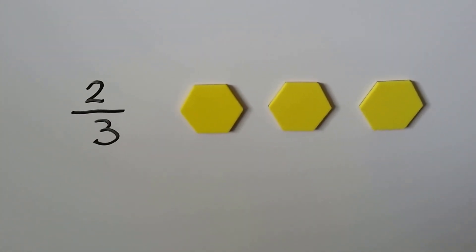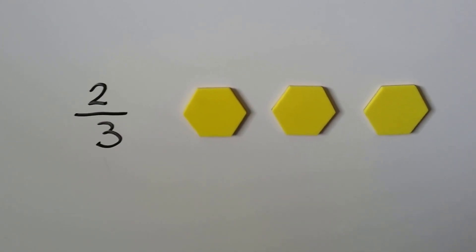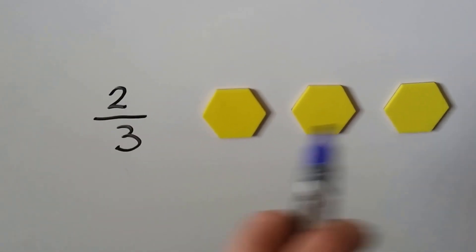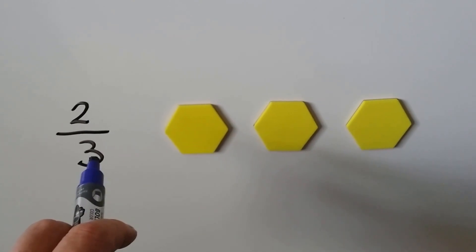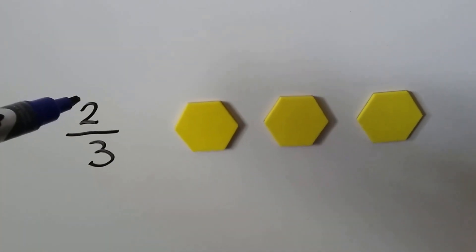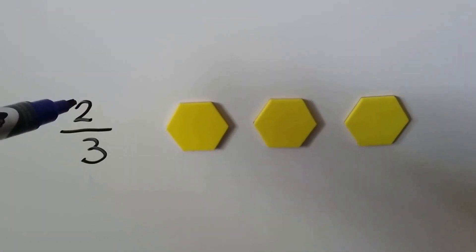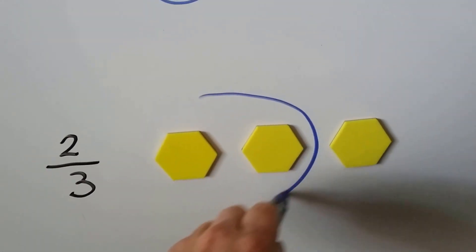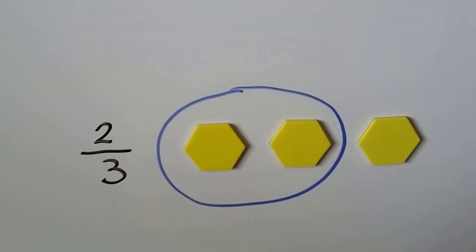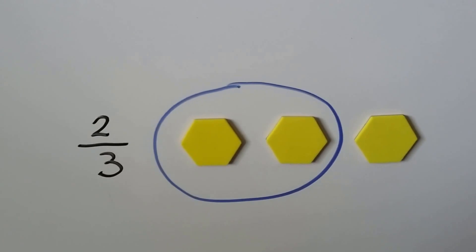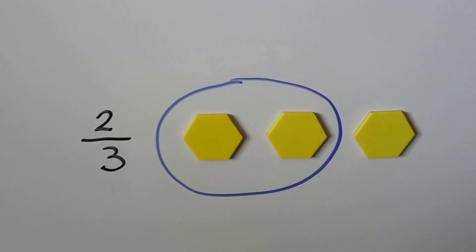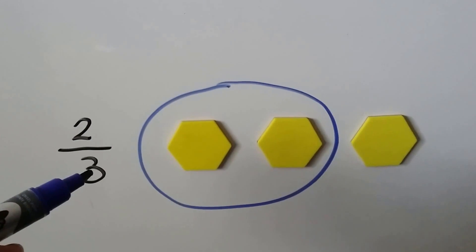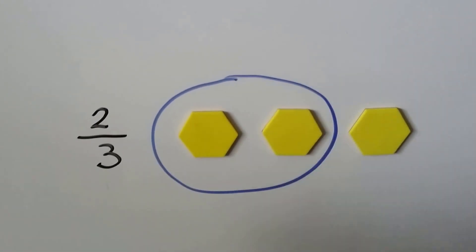We have hexagons. Two-thirds of these hexagons need to be circled. There's three here — that's our bottom number, how many are in the group. This is telling us that two need to be circled. Two-thirds of the hexagons are circled. This is how many are in the group; this is how many need to be circled.